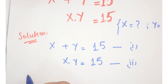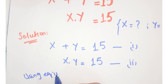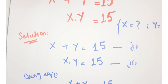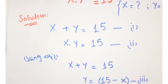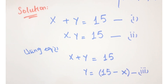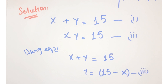Using equation number 1, we have x plus y equals 15, or y equals 15 minus x. Call this equation number 3. Now put this value of y, which is 15 minus x, into equation number 2: x times y equals 15.